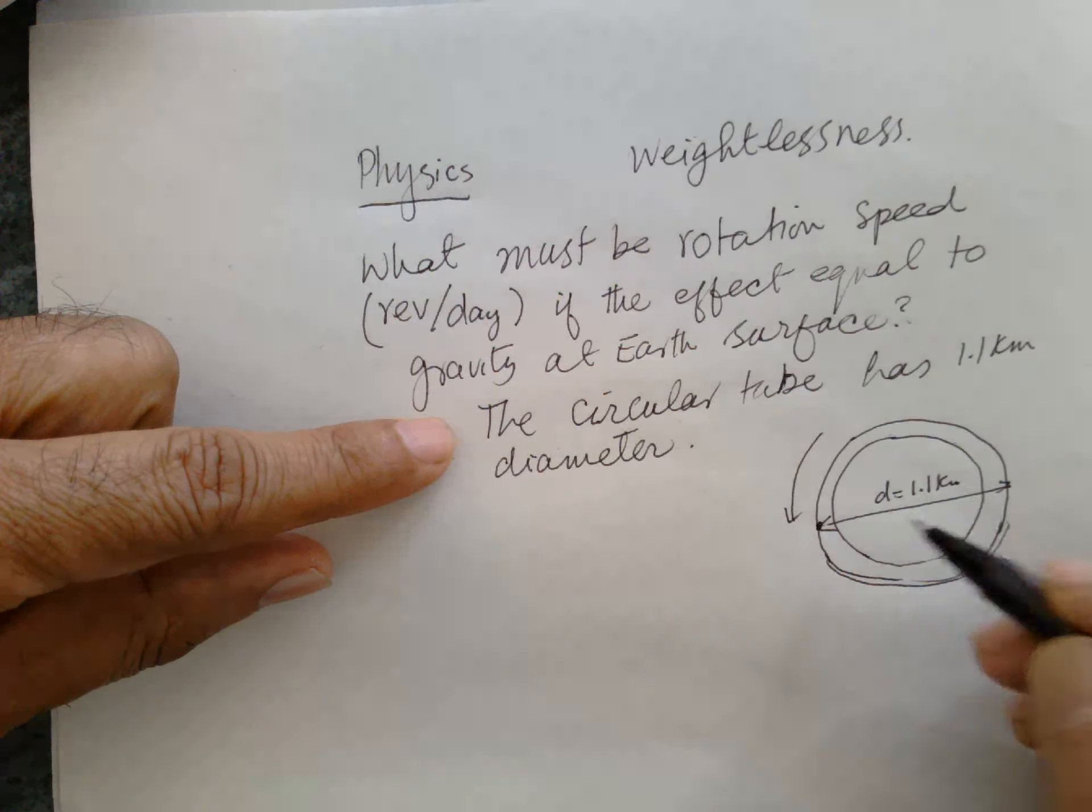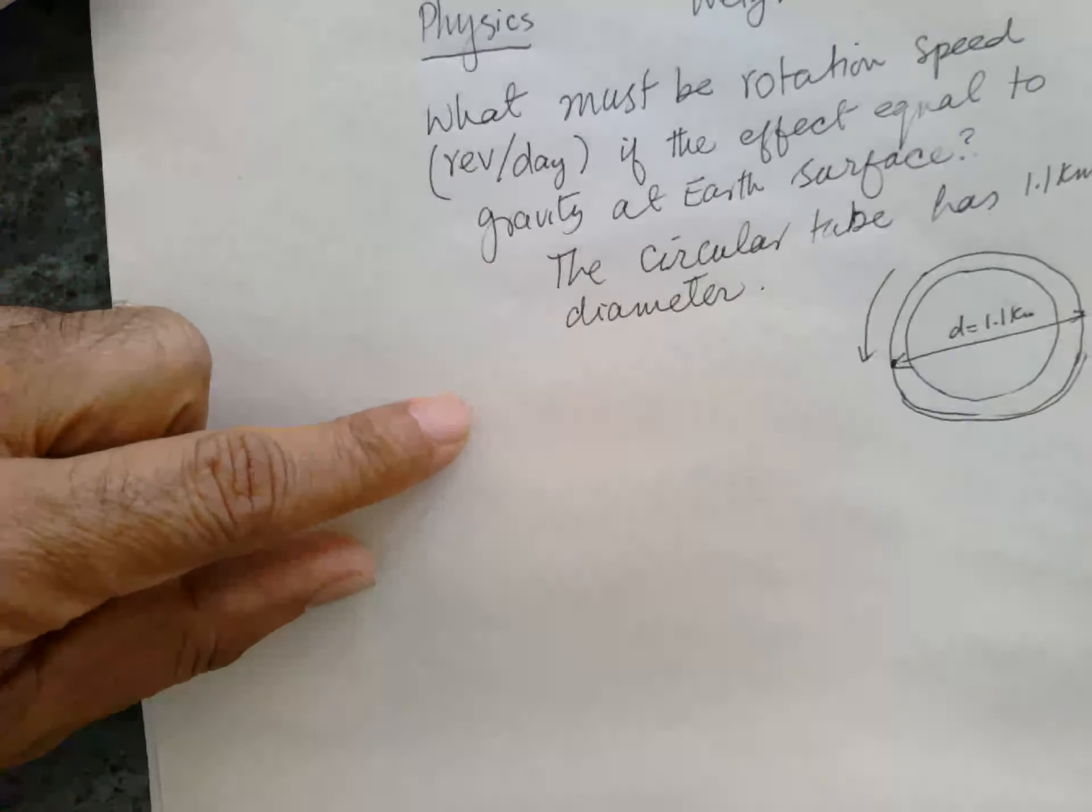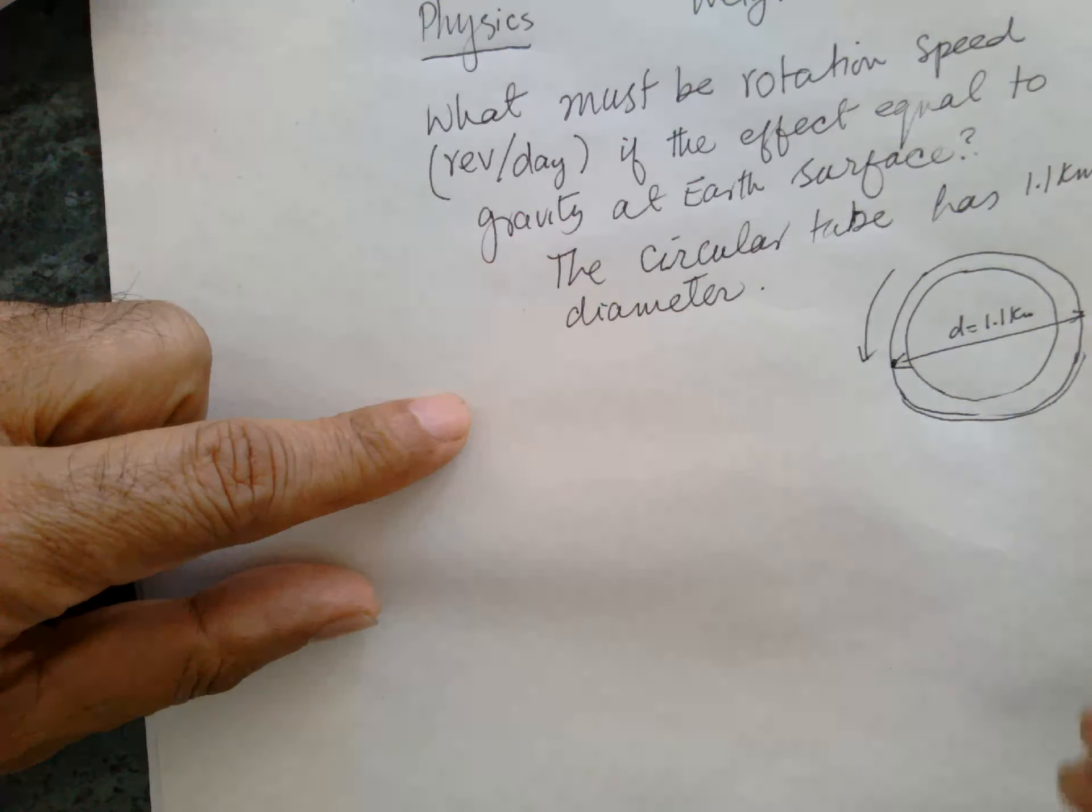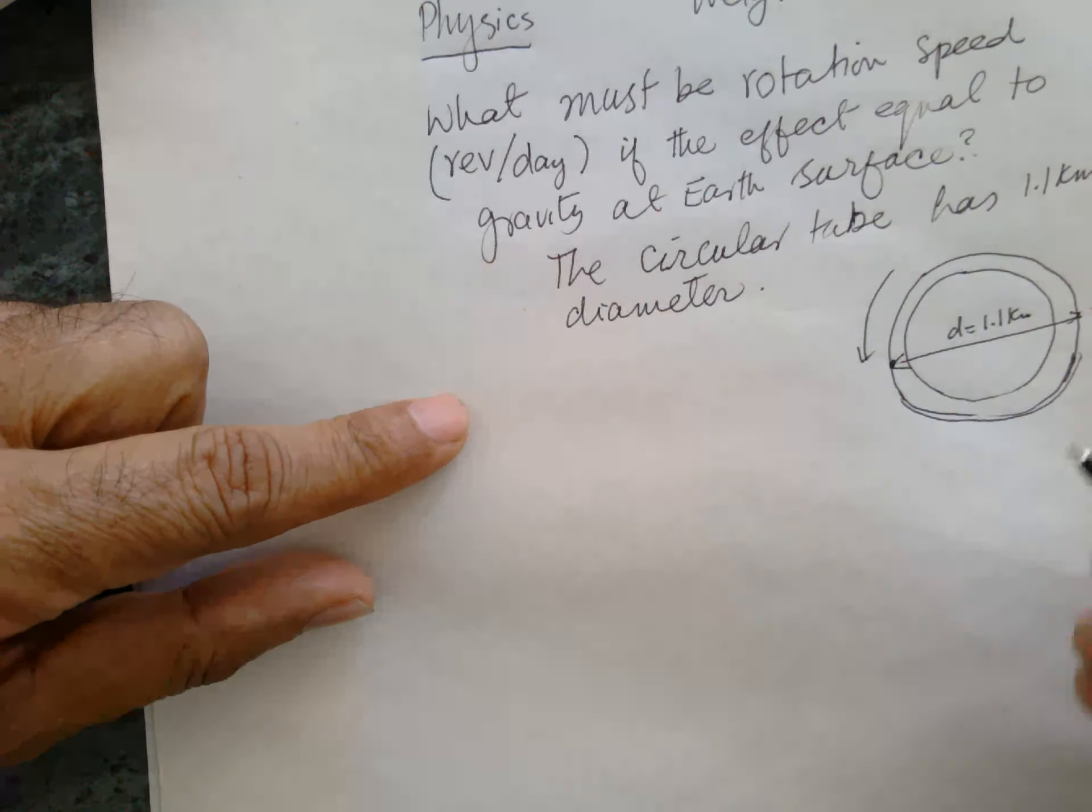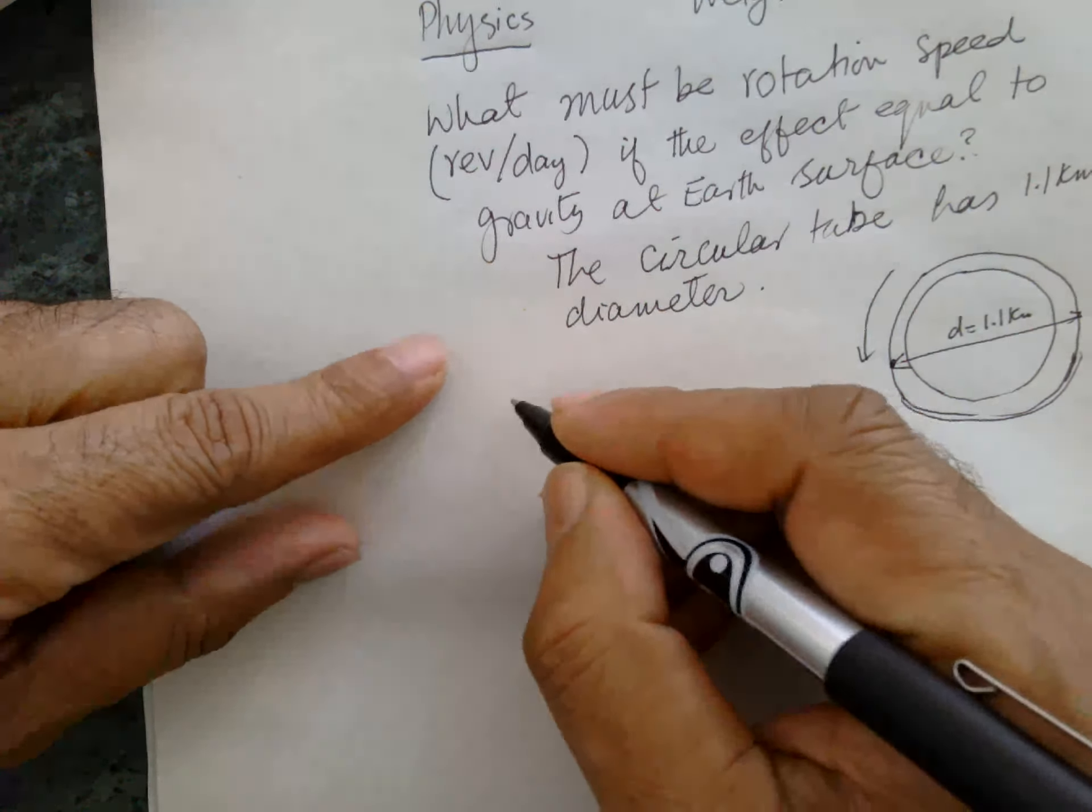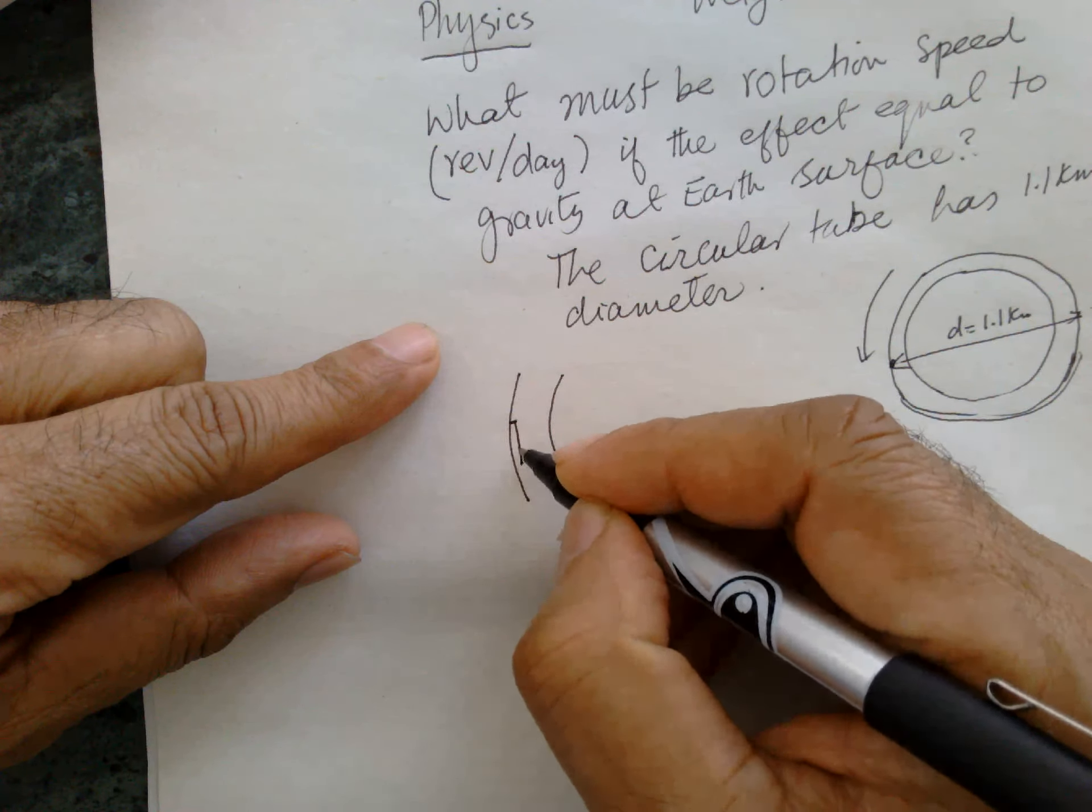So what should be the revolution speed so that weightlessness should be experienced? The object is here. This is a tube, then this is the object.